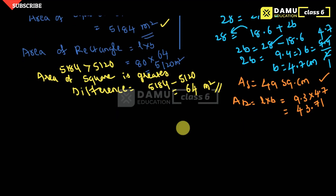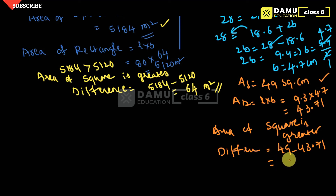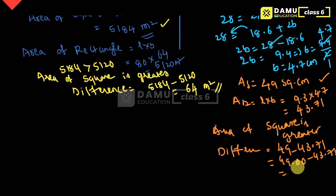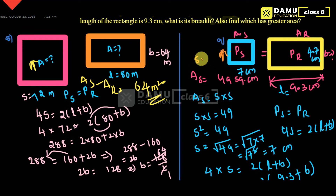In this question also, area of square is greater. The difference is 49 minus 43.71. Taking 49.00 minus 43.71 and doing the subtraction, you get 5.29 square centimeters. So the area of square is greater by 5.29 centimeters square. Thanks for watching, please subscribe.